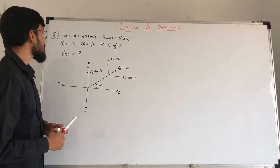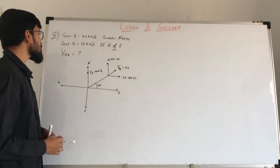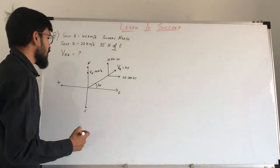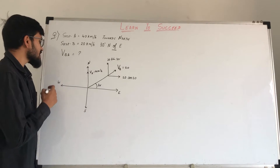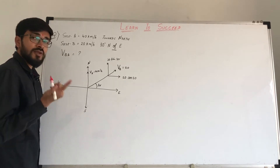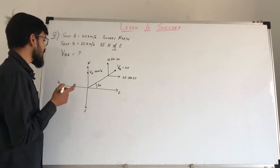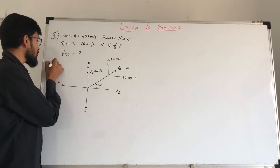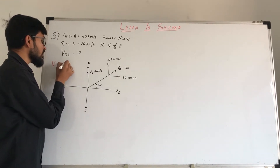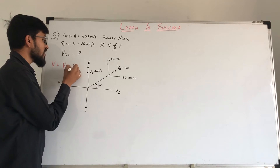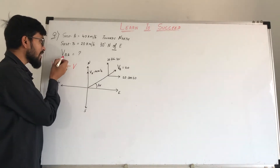The relative velocity of B with respect to A — this is the formula I learned in the previous video. V_BA equals V_B minus V_A.